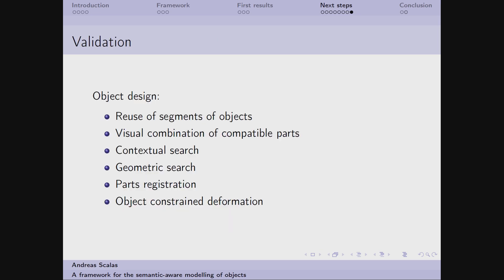The second scenario instead is that of the object design, in which the user wants to reuse some parts of an already modeled object, and so the framework should suggest an alternative for the structural parts of the object, but even it should allow the visualization of the new shape in the contextual search, that is for example searching for all the objects that contain a particular part, and the registration of parts onto the template, and at last the deformation of the object and the shape of the object and even of its topology to meet the user requests, provided that they satisfy the requirements, the constraints that we impose on the other template.